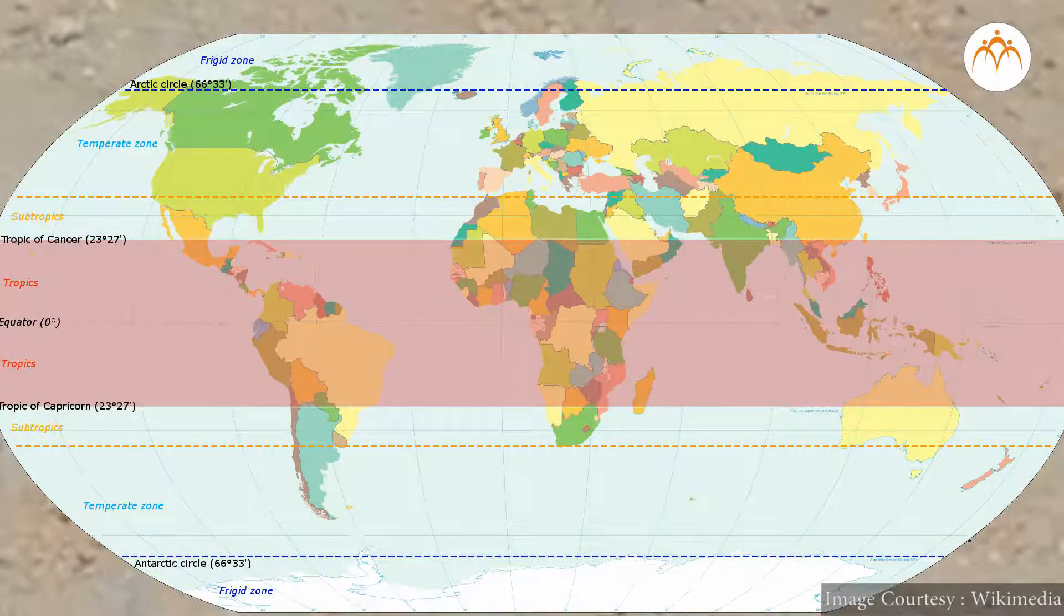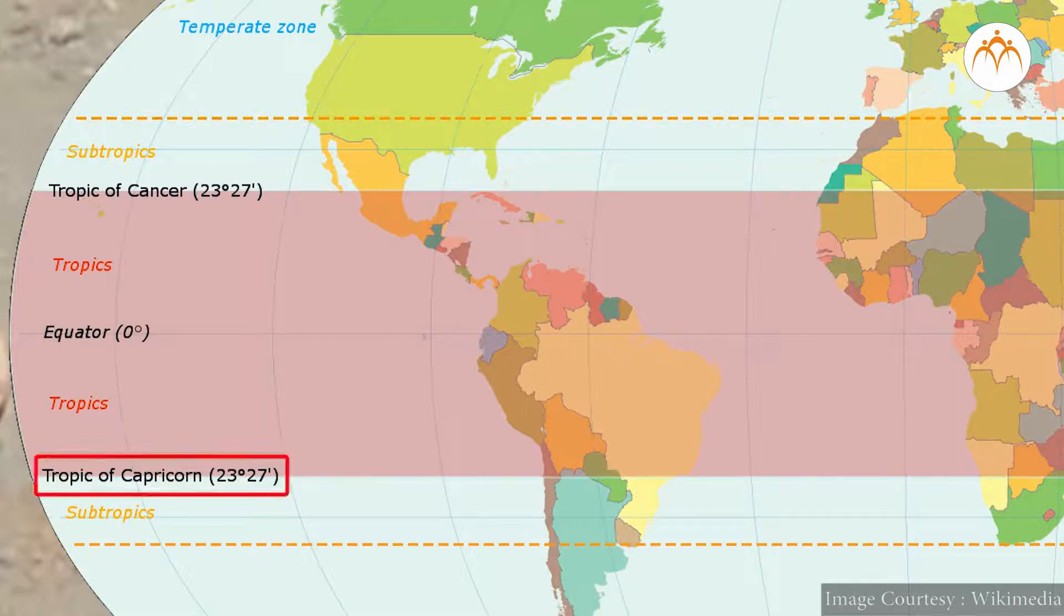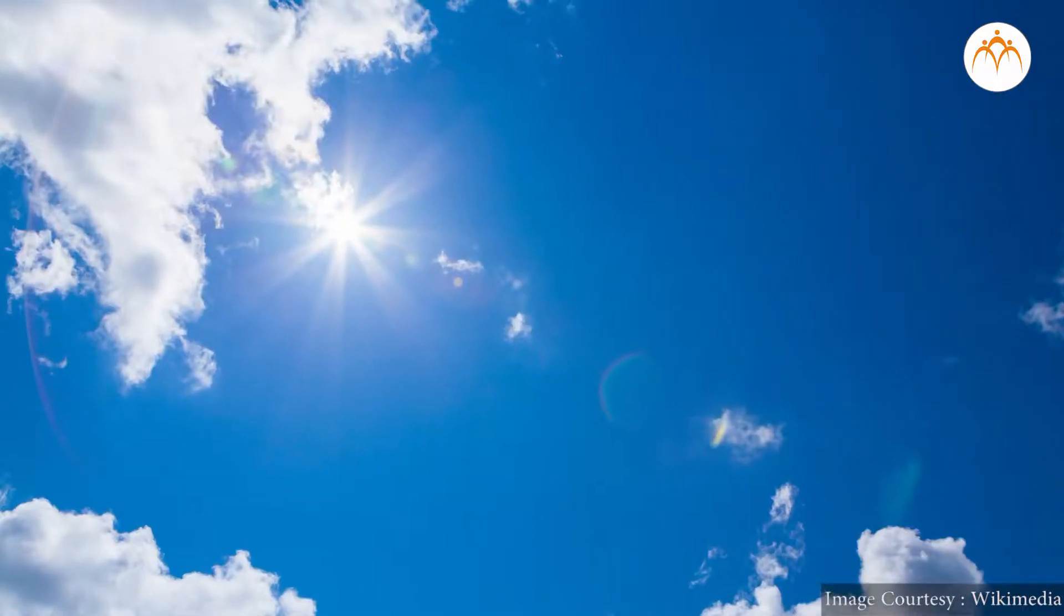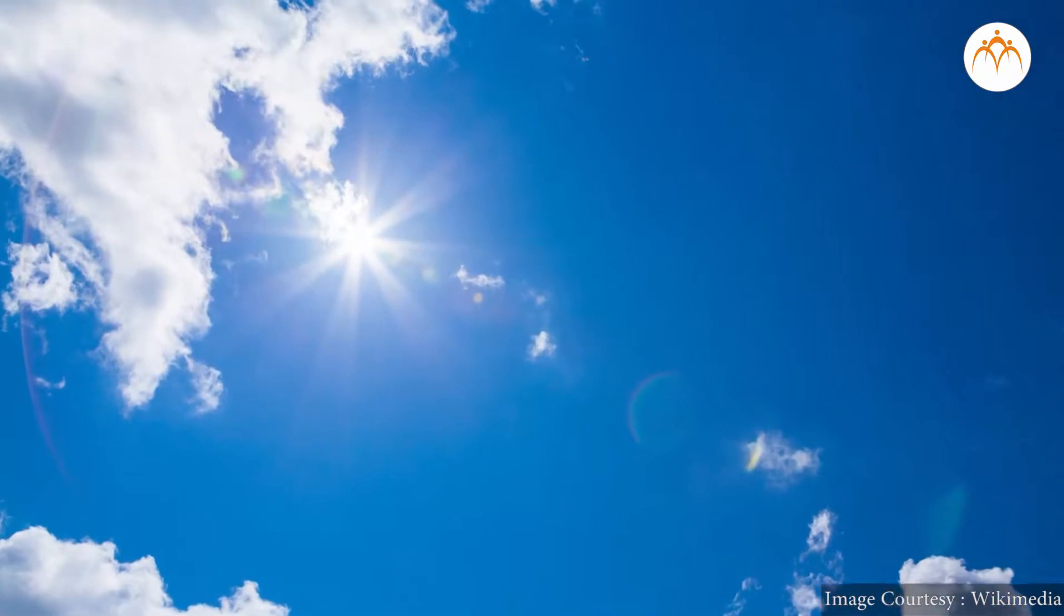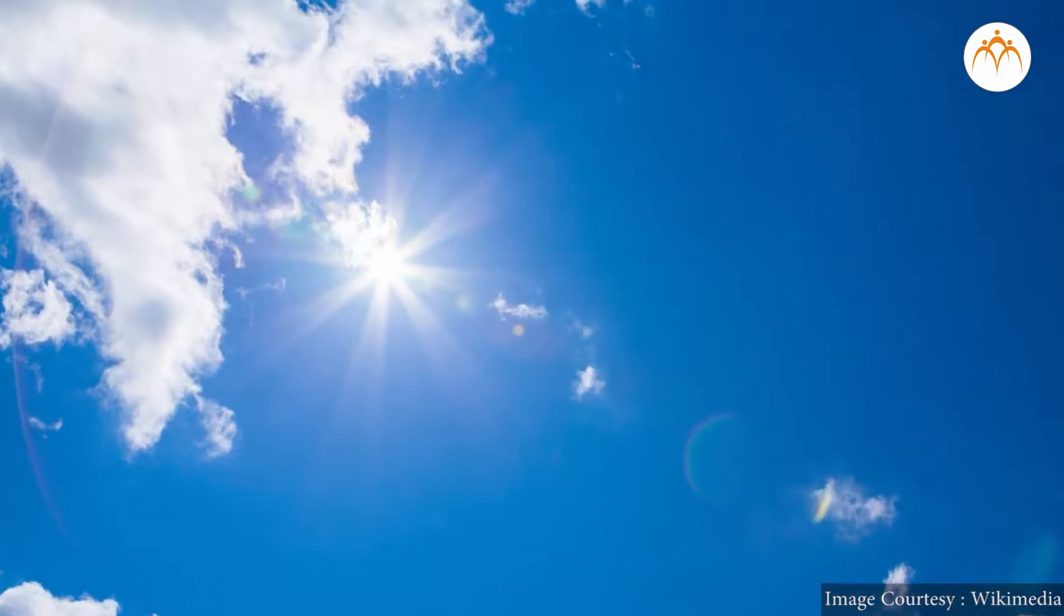It happens twice a year for places between positive 23.5 and negative 23.5 degrees latitude. The sun is almost never exactly overhead at noon, but usually transits a bit lower in altitude, a bit to the north or to the south.